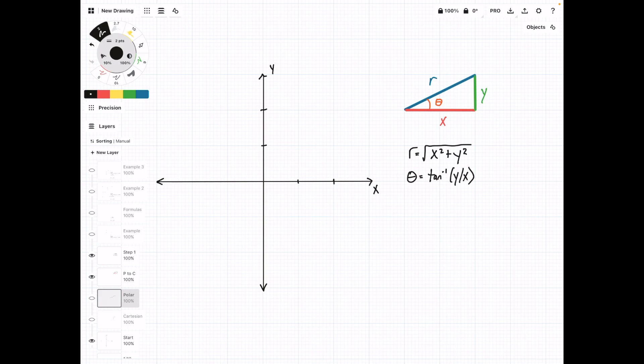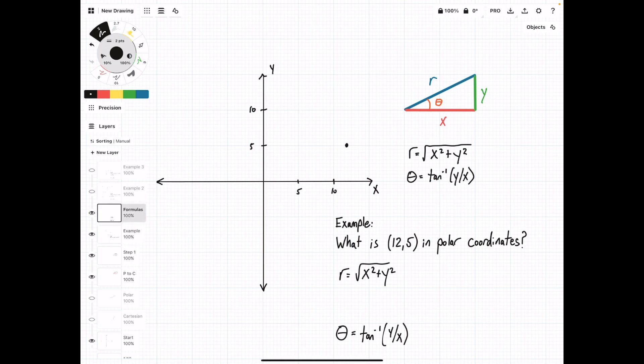So now we can try to take a Cartesian point and convert it to polar coordinates. We're given (12, 5) as our point, and we want to convert it. We're going to do that by using these formulas, and we're just going to plug in the values that we know.